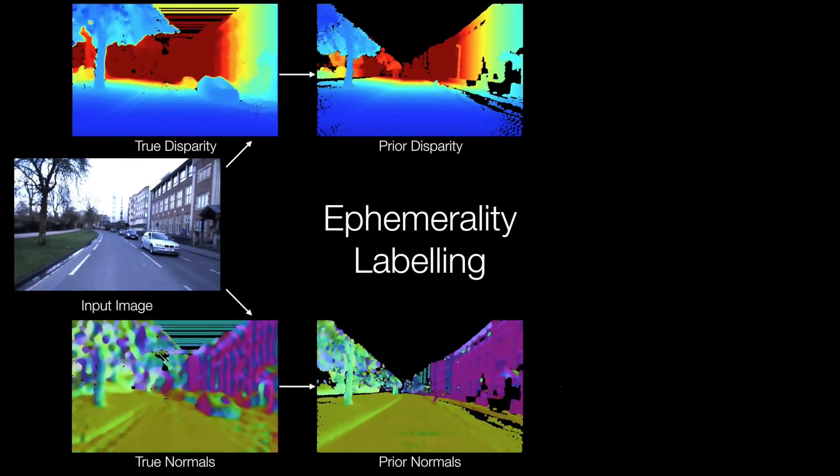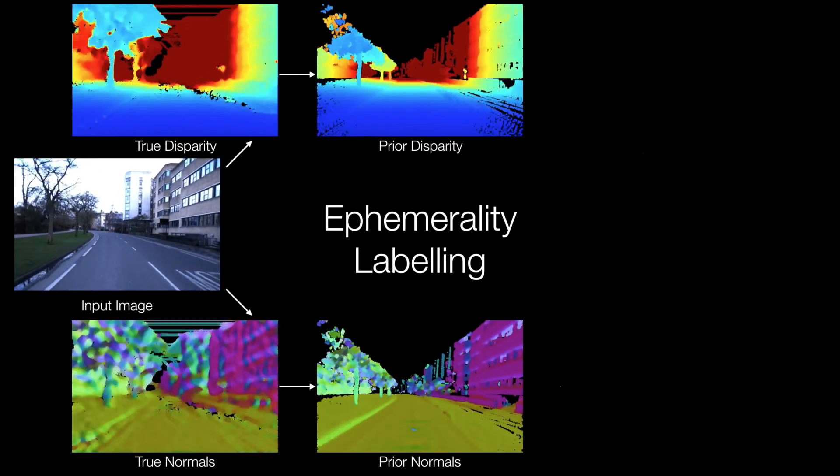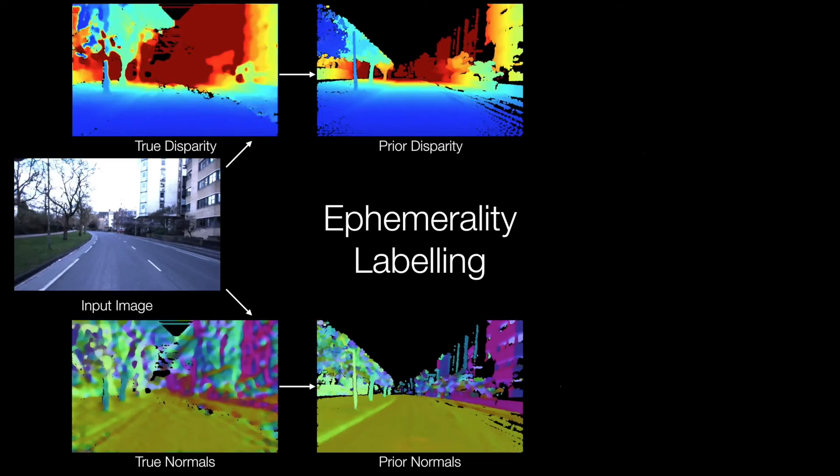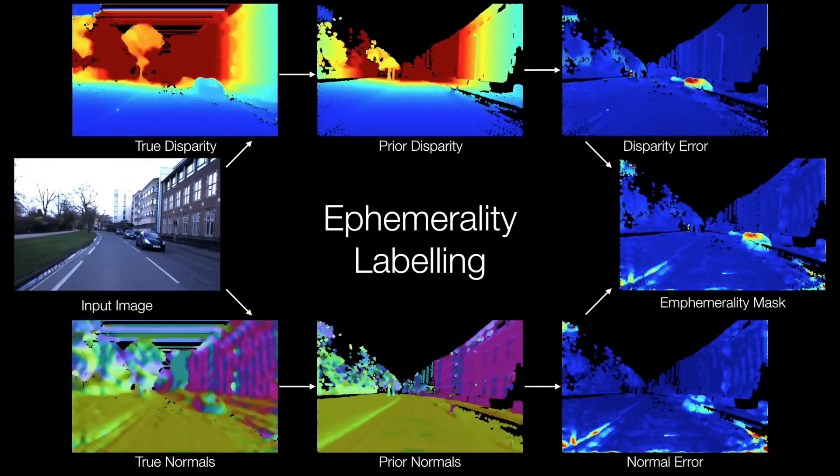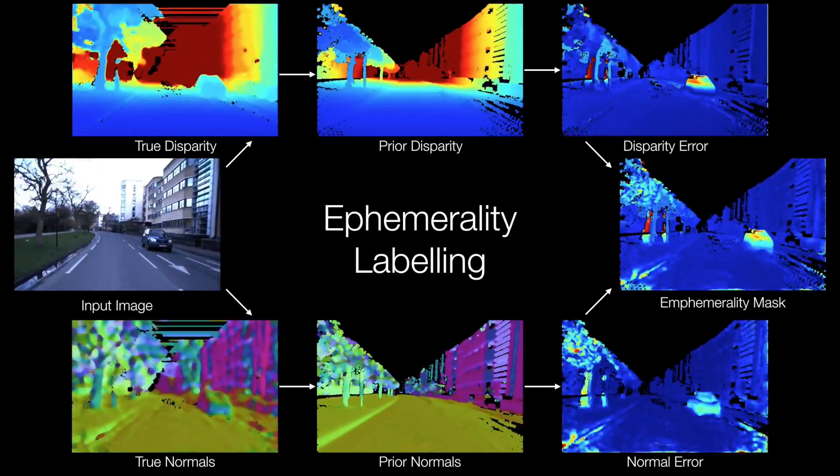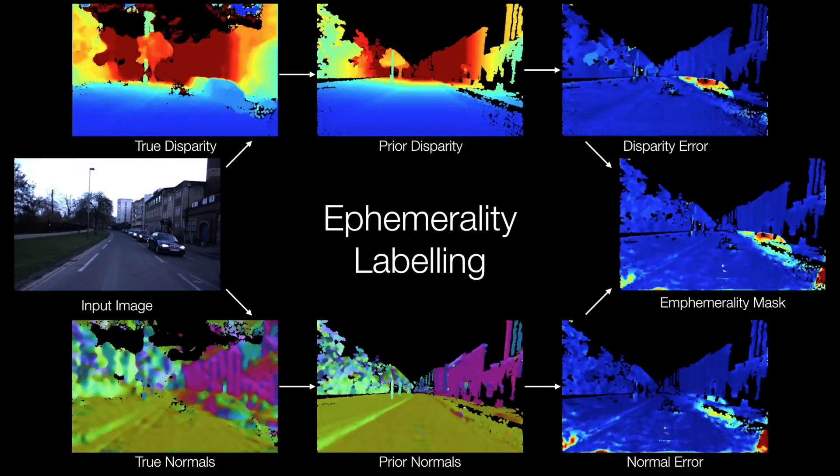To build ephemerality masks for training we first compute the true disparity and normals using an offline dense stereo approach. We project the prior 3D static structure into the image to create the expected disparity and normal images. In the presence of traffic or dynamic objects these will differ considerably. We compute the ephemerality as a weighted sum of these differences.